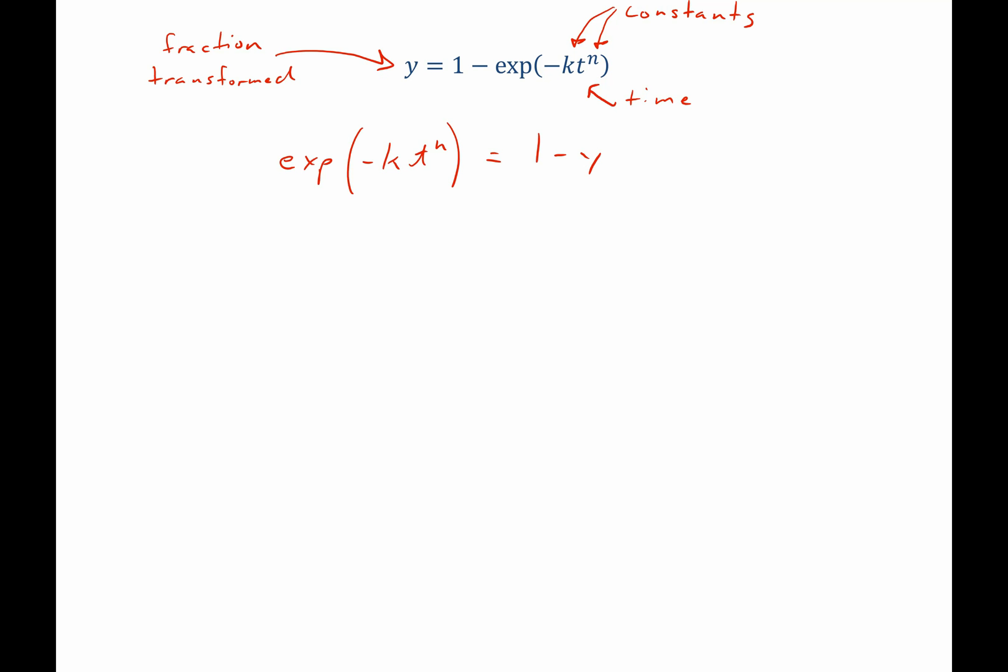Since we have this negative sign in our exponential we'd like to get rid of it, we can take 1 over both sides to get the following: exponential of now positive kt to the n equals 1 over 1 minus y.